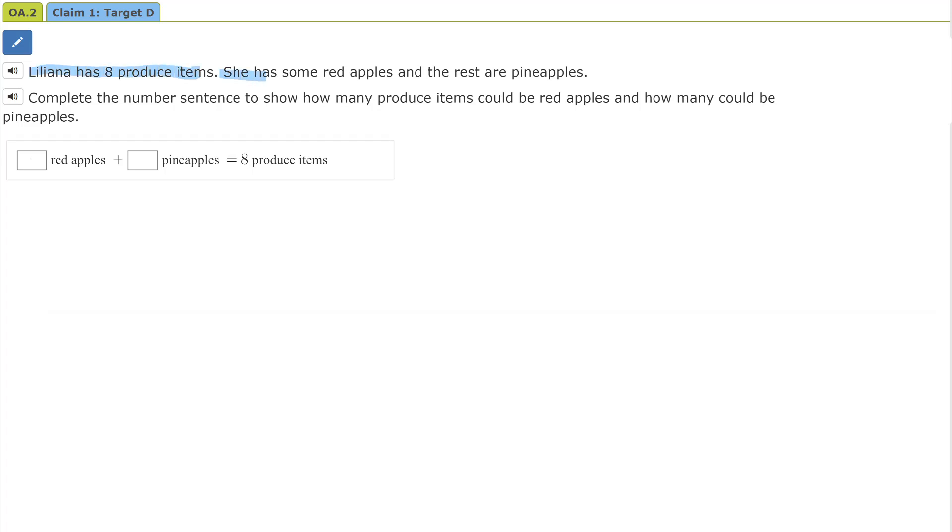Lalani has eight produce items. She has some red apples and the rest are pineapples. Complete the number sentence to show how many produce items could be red apples and how many could be pineapples. So blank number of red apples plus pineapples equals eight produce items.